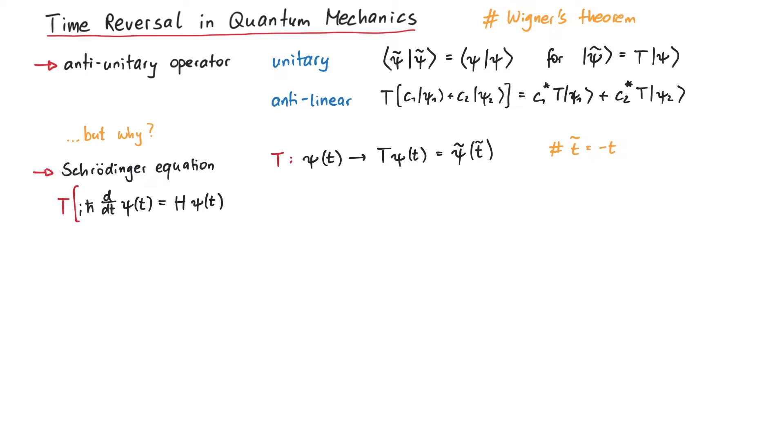If we apply T on the whole equation, we get i h-bar d over dt tilde psi tilde of t tilde, being equal to H psi tilde of t tilde, assuming that the Hamiltonian does not explicitly depend on time. If we now change the time derivative back to the usual time t, we get a minus sign, such that the whole equation looks like a complex conjugated version of the original equation.